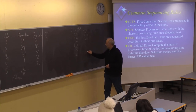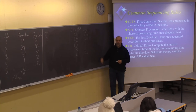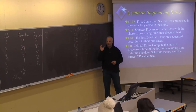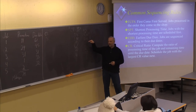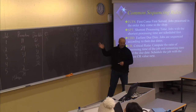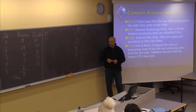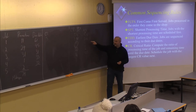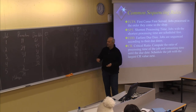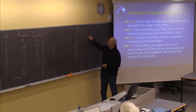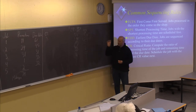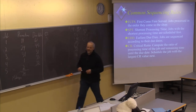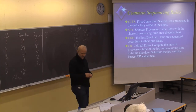Numbers lower than zero indicate the job will be delayed before it is finished. Job number two has the smallest number — 0.48 — meaning it is the most critical job. We should now schedule job number two at the next position according to the critical ratio.